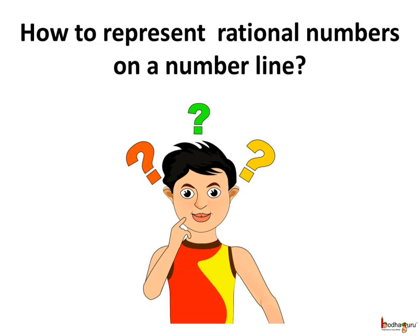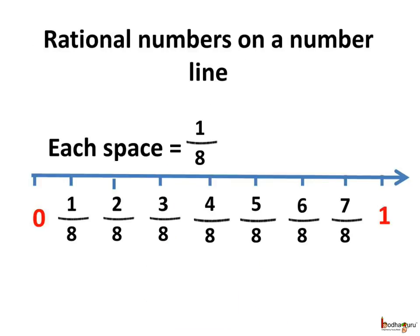Now, how to represent rational numbers on a number line to compare? Let us represent the rational numbers between 0 and 1. For this, we divide the space between 0 and 1 into 8 equal parts. Dividing into 8 equal parts means we want to represent the rational numbers with the denominator as 8.